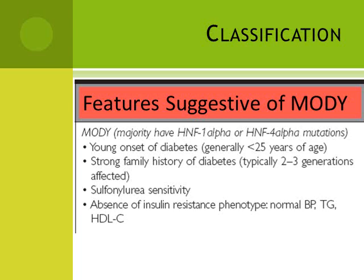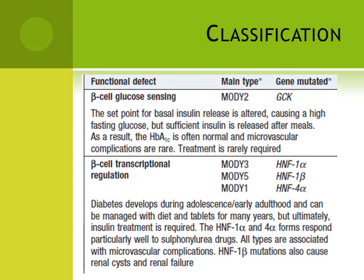MODY patients are sensitive to sulfonylurea and show absence of insulin resistance phenotype — that is, no high blood pressure, normal triglycerides, and normal HDL cholesterol levels. They are further classified according to the mutated genes involved. The main type is MODY 2, with the mutated gene GCK: the set point for basal insulin release is altered, causing a high fasting glucose, but sufficient insulin is released after meals, so HbA1c is often normal and microvascular complications are rare — treatment is rarely required.